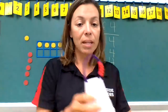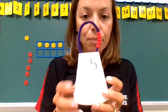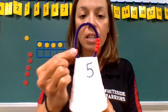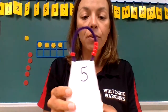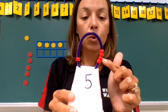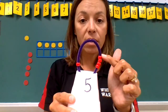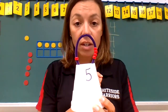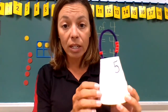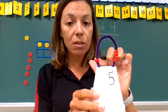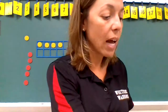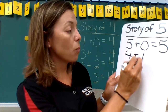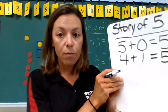If we look at our cup again and we take one of these beads and move it to the other side, now we have one, two, three, four beads on this side and one bead on the other. Our number sentence is going to be four plus one equals five. So let's write that on our board: four plus one equals five. So far we have two ways of making a five.